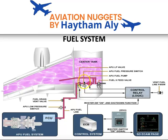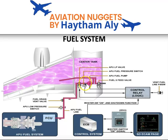Who decides the operation of the APU fuel pump? This pressure switch, or pressure sensor, as you can see here — this is the APU fuel pressure switch. This switch or sensor always monitors the pressure of the fuel in the line, and if the pressure of the fuel drops and is not satisfied by the wing tank booster pump, this pressure sensor gives the signal to the control logic and the APU booster pump will operate.